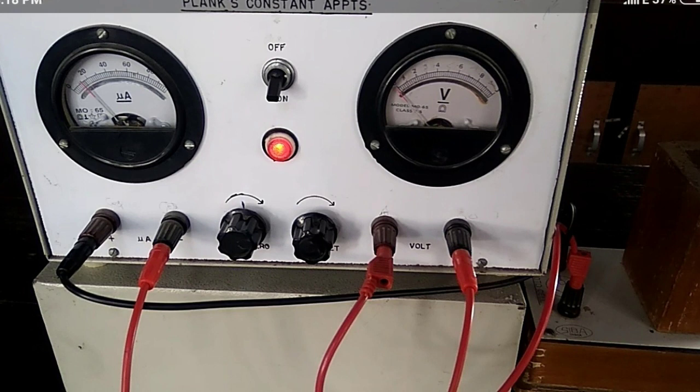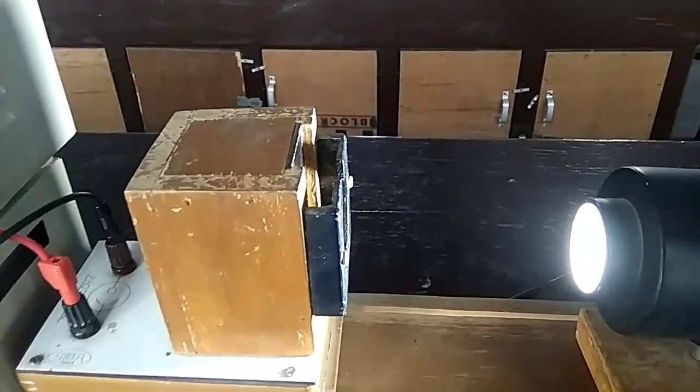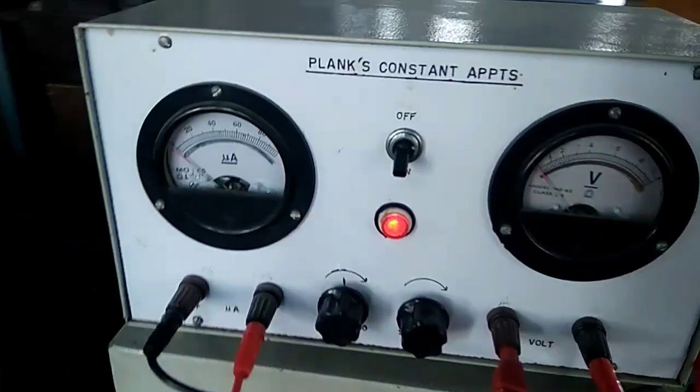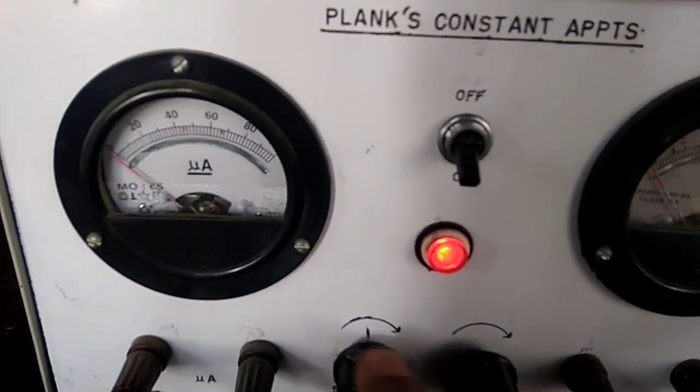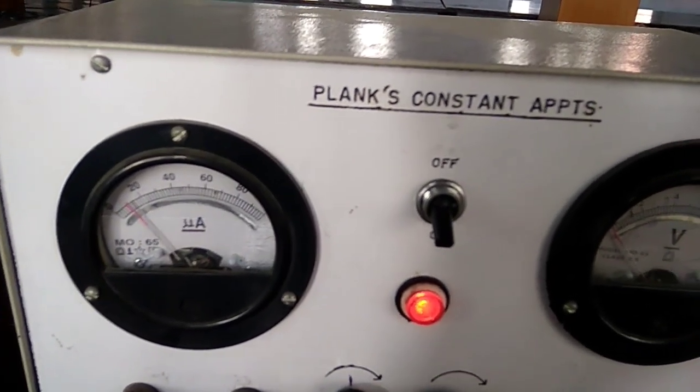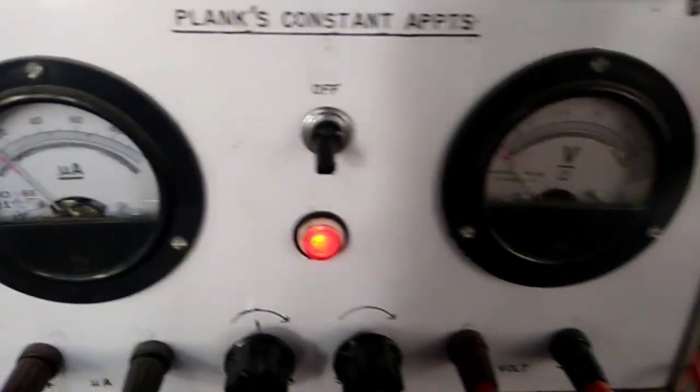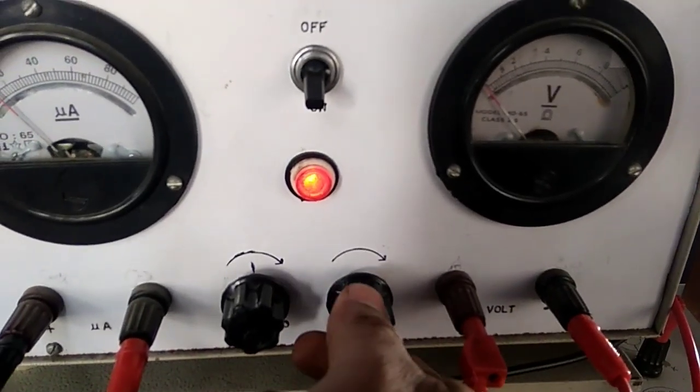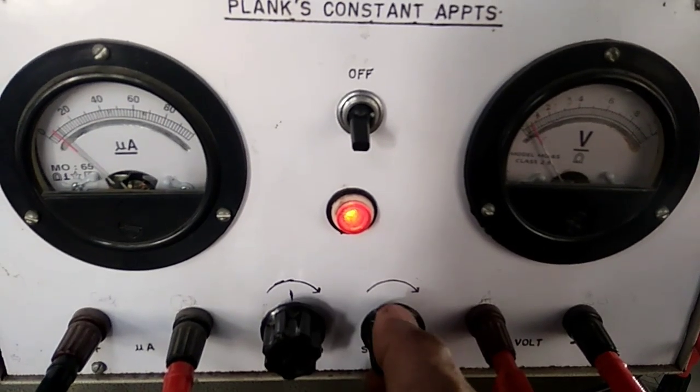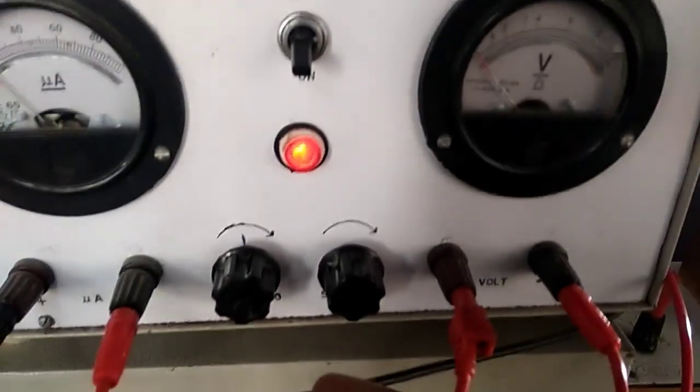Firstly, we use a filter. Suppose we put the green filter and set the current value to 10 microamperes. Then we increase the voltage, and that voltage is known as the deaccelerating voltage because we connect the cathode of the photovoltaic cell